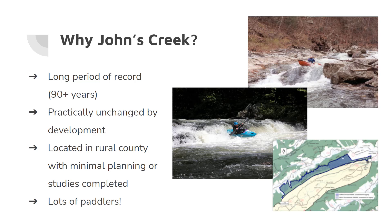Why did we pick Johns Creek specifically? First of all, it has a very long period of record, and what we will learn throughout this module is that the sample size of our data — in this case, the period of record is representative of the sample size — is going to increase the certainty that we have in our results. The land is practically unchanged by development, mostly because it is located within Jefferson National Forest. It is located in Craig County, a rural county that has minimal planning or studies actually completed on the area, so there's an obvious need for these kinds of analyses. Also, Johns Creek is actually a very popular spot for paddlers, so they might be an interested party as well.